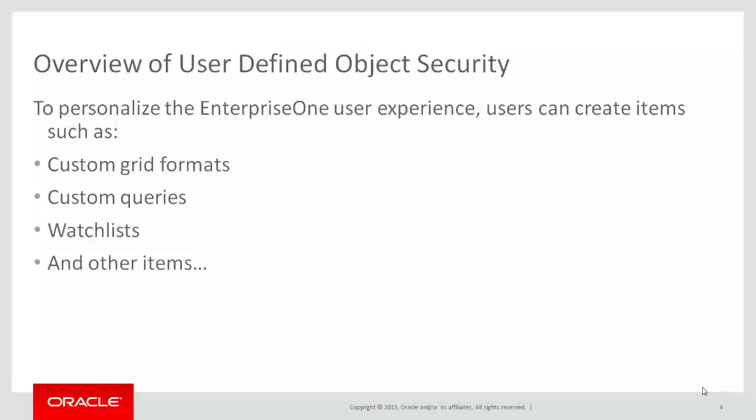Enterprise One provides tools for creating custom grid formats, queries, watch lists, and other items that enable users to personalize their Enterprise One user experience. When these items are created, they are saved in Enterprise One as user-defined objects, which I'll refer to using the acronym UDO, pronounced UDO when referring to user-defined objects.